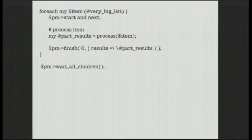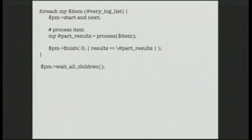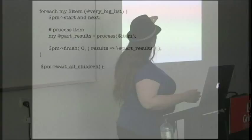So once we've got that, we can process our items. For each item in the list, we call start on the fork manager - that says 'do that fork, create this new child process.' It returns a true value to the parent and a false value to the child. The parent skips on to the rest of the loop. The child continues to run until finish is called. If you forget finish, it will continue running and attempting to run the rest of your script - so you probably don't want to do that. Typically you would call a subroutine, which is essentially what we're doing here.